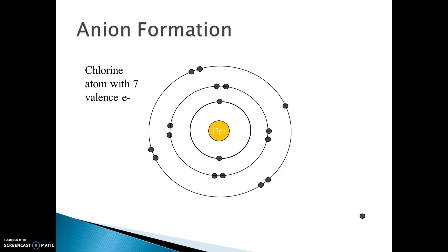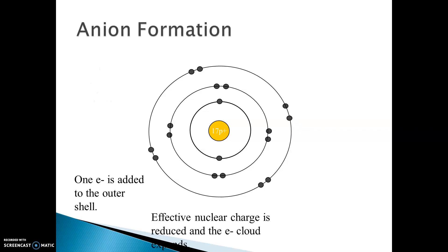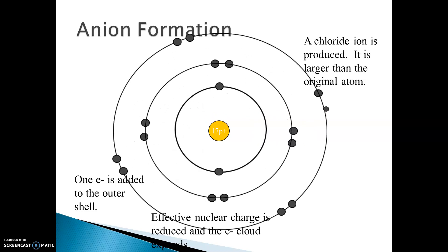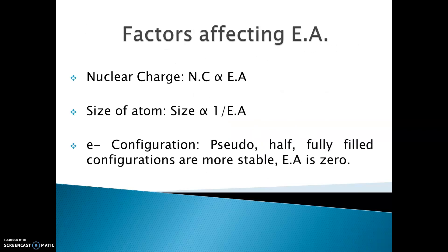So it will accept one electron into the outermost shell. The effective nuclear charge between the nucleus and the outermost electrons is reduced, the electron cloud will expand, and a chloride ion is produced which is larger than the original atom.